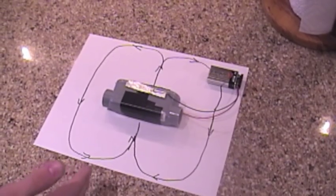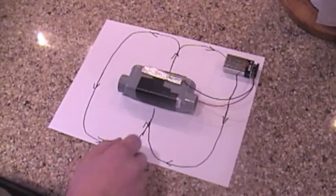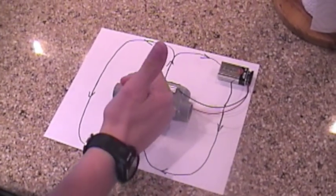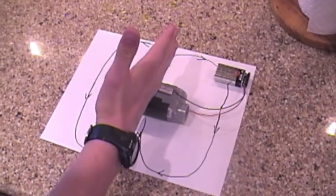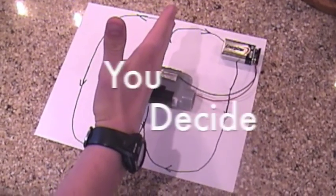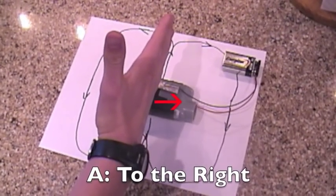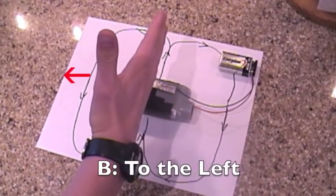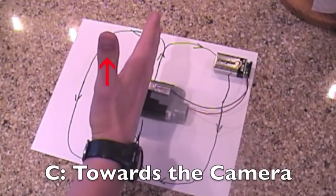Now we use the right hand rule to determine the direction of water flow. So the direction of the electric current is going this way, and the direction of the magnetic field is that way. So now which way is the water going to flow? Is the water going to flow A to the right? B to the left? C towards the camera?